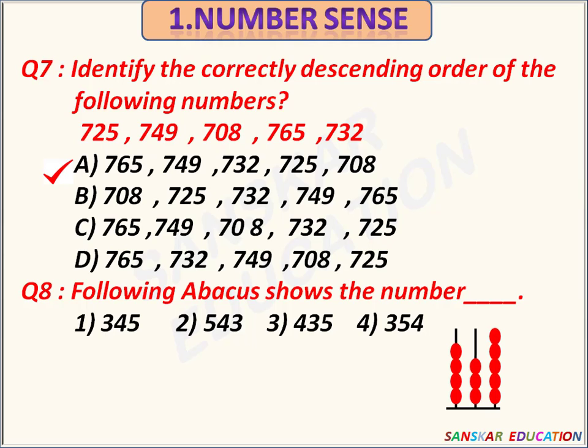The following abacus shows the number dash. Options are 345, 543, 435, 354. The given abacus shows the number 435. Option C is the correct answer.